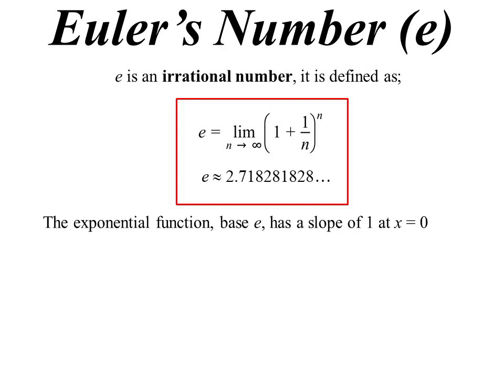Now the thing about the exponential function, why is this so important? You see, the function where the base is e, we know, has a slope of 1 at x equals 0. We know this to be true. So therefore, this particular exponential becomes the easiest derivative of them all.